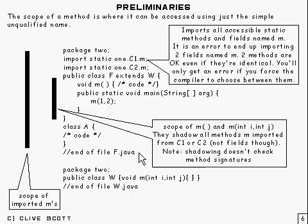Now, shadowing does not check method signatures. So this is not like hiding or overriding. The signature doesn't count, it's just ignored.